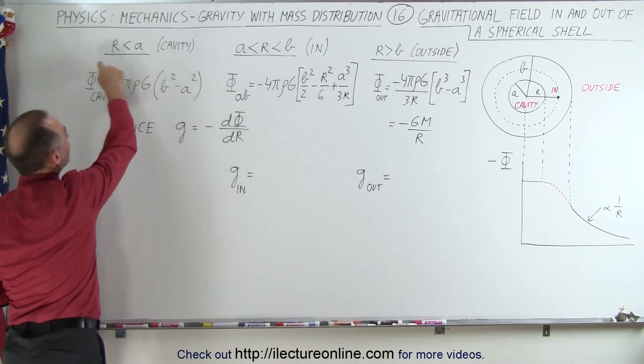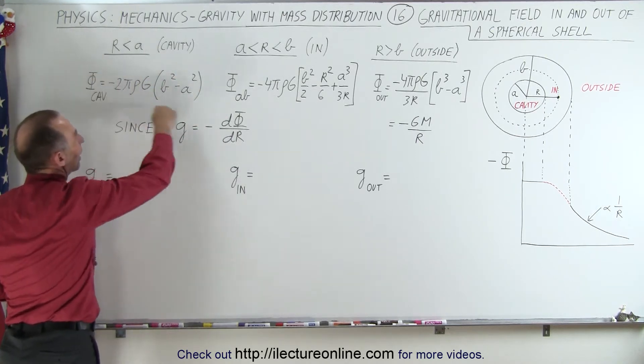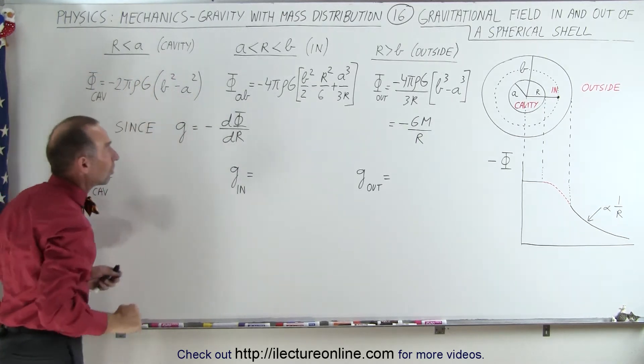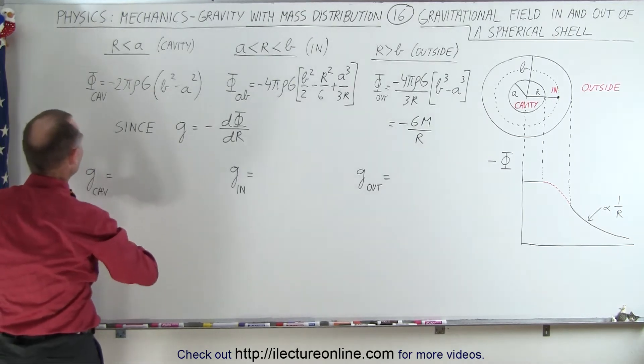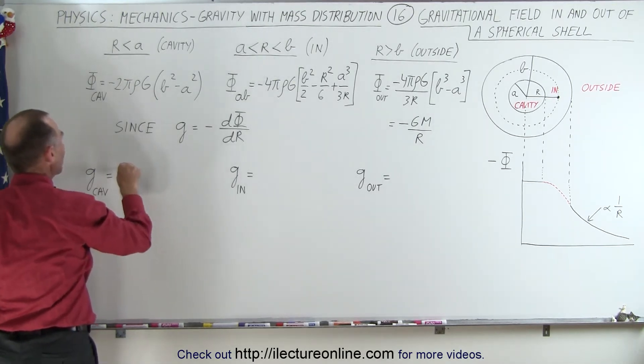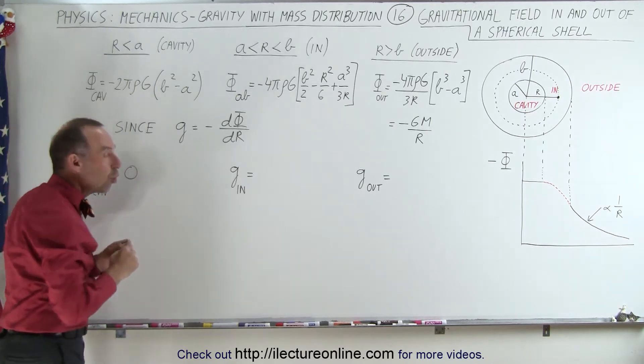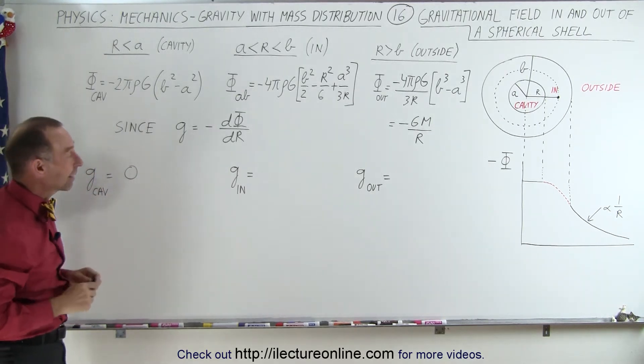When we look inside the cavity, we notice there is no dependency on the radius. This is simply a constant. So when we take the derivative of a constant, we realize the gravitational field inside the cavity must be equal to zero, therefore there's no gravitational acceleration inside the cavity.